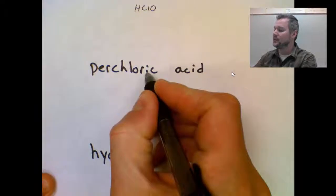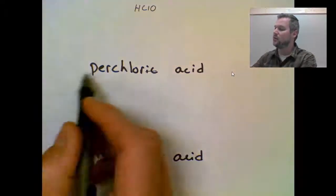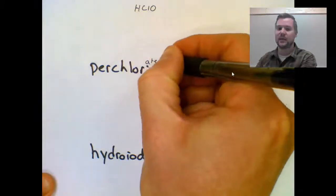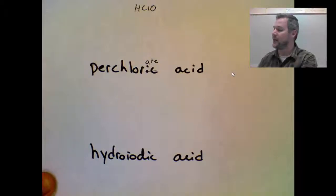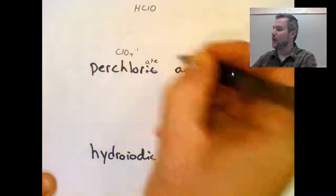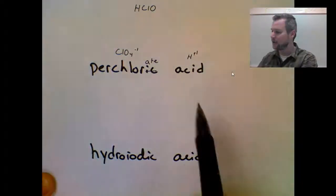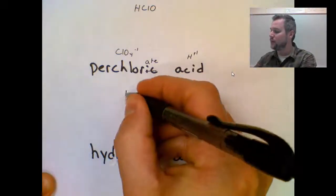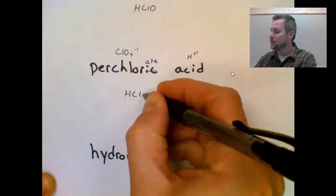Perchloric acid. Because it ends in -ic and doesn't start with hydro, it came from -ate. So that means I'm looking for the perchlorate anion, which would be ClO4 minus one. Acid means hydrogen ion. Hydrogen ion goes on the front end, plus one, minus one. No need to crisscross this.